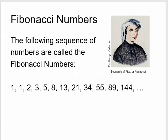The following sequence of numbers is called Fibonacci numbers. There are an infinite number of Fibonacci numbers and they go on forever. They were originally defined by Leonardo of Pisa, also just called Fibonacci. The numbers are: 1, 1, 2, 3, 5, 8, 13, and so on.